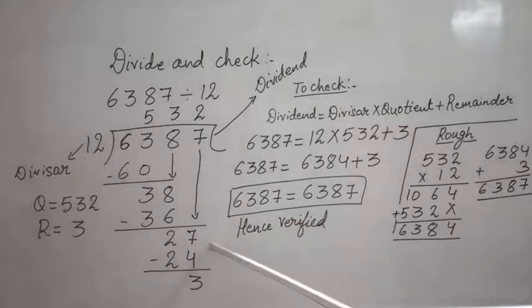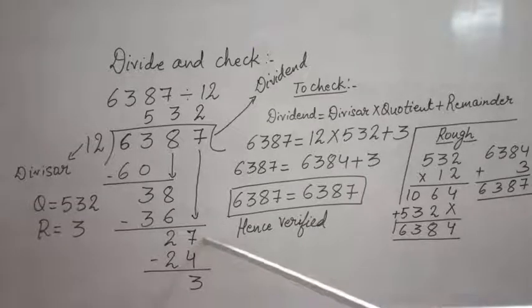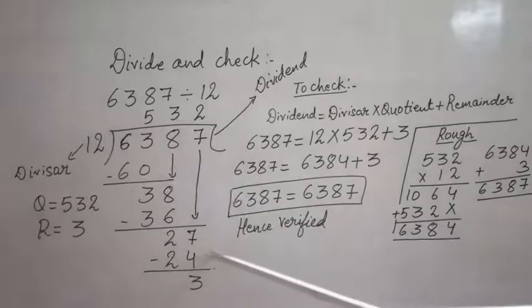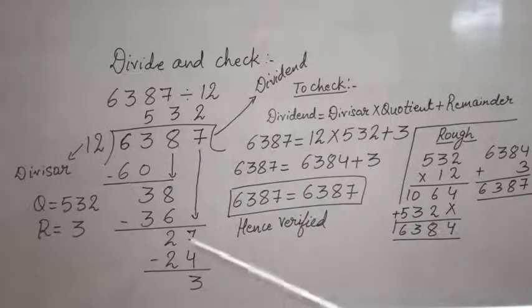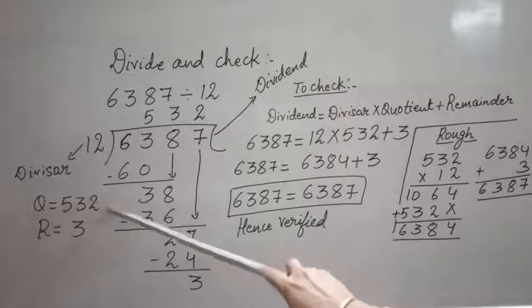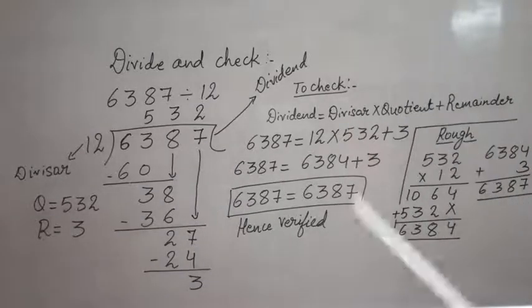Now I will subtract: 7 minus 4 is 3, 2 minus 2 is 0. So finally, my quotient is 532 and my remainder is 3. Again, I need to check, so for checking...